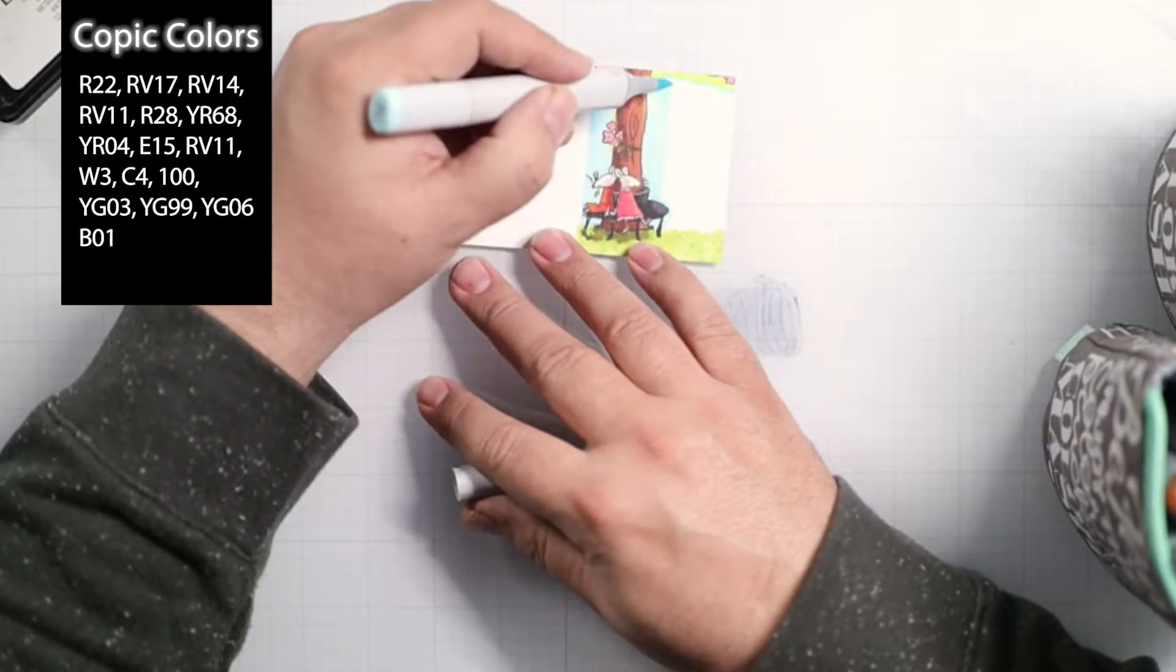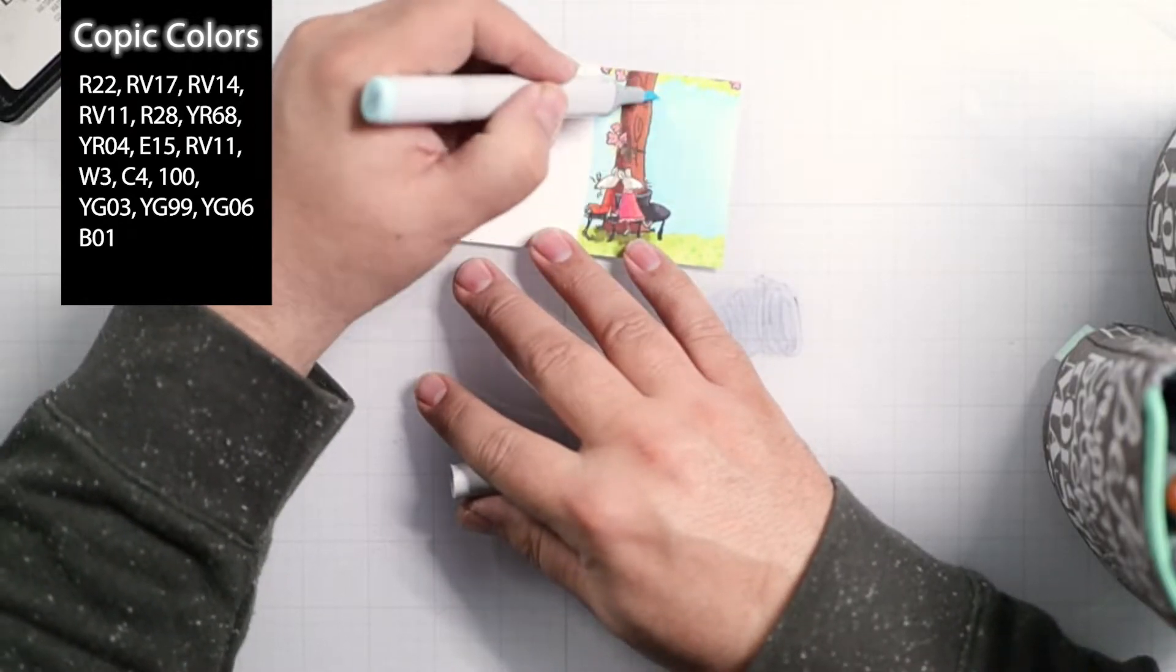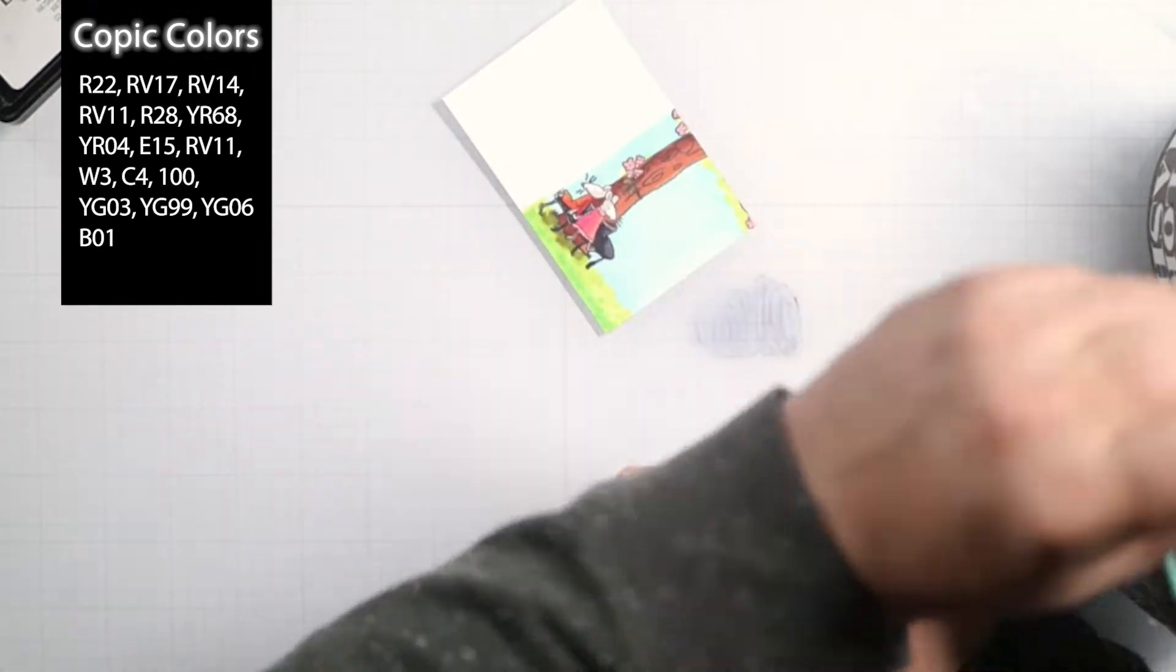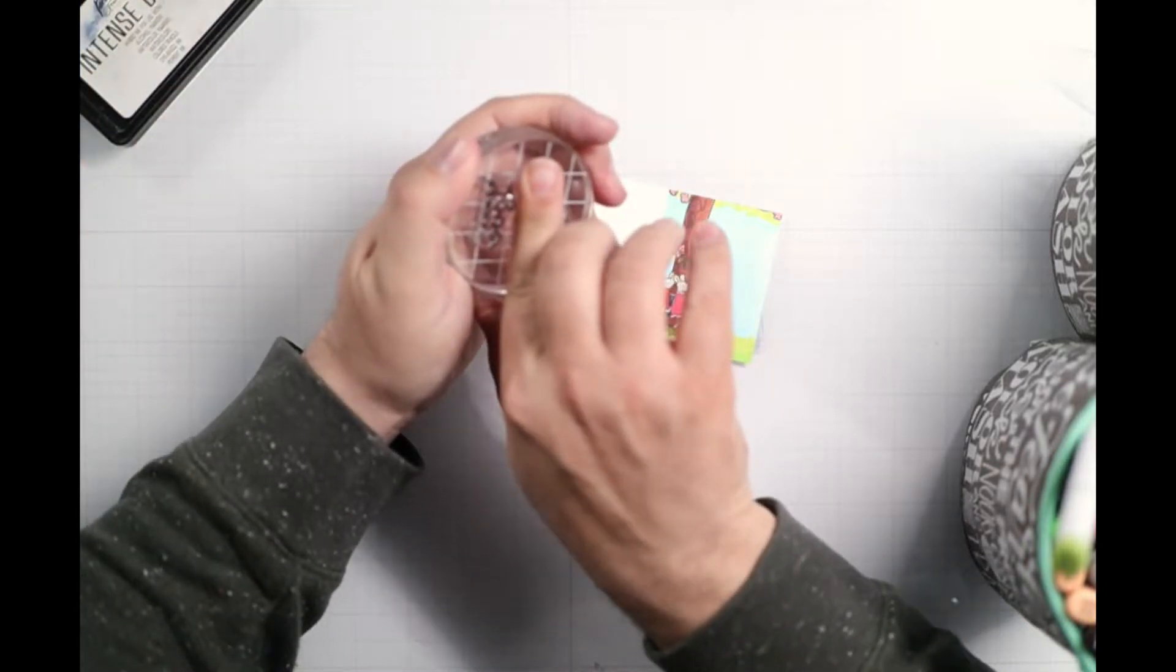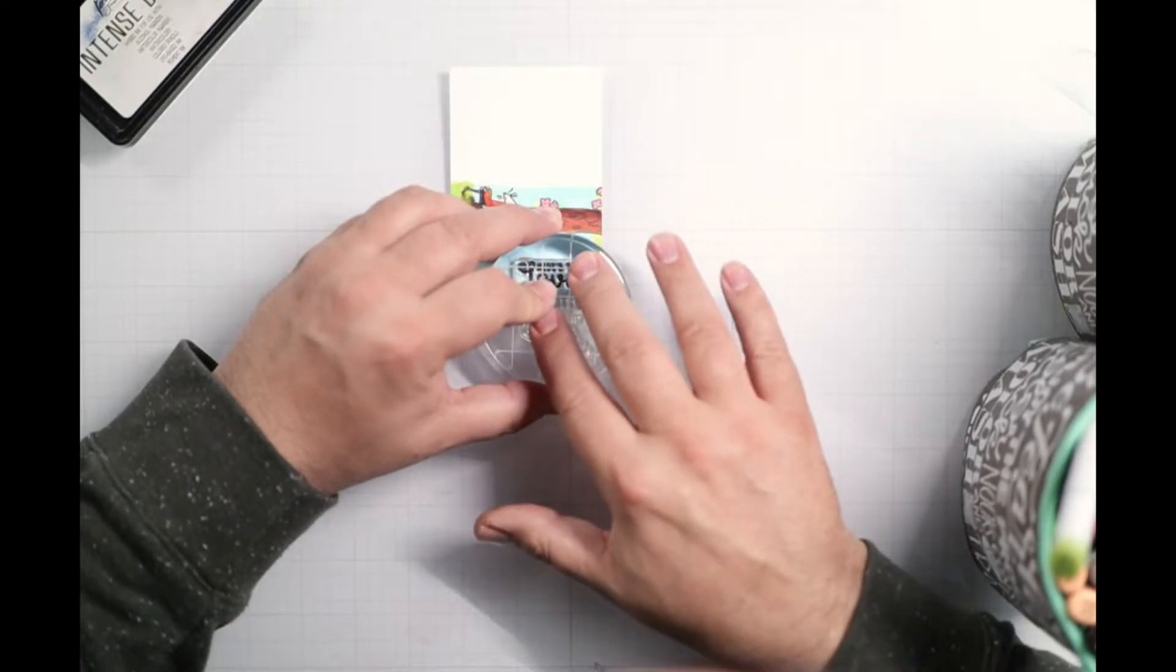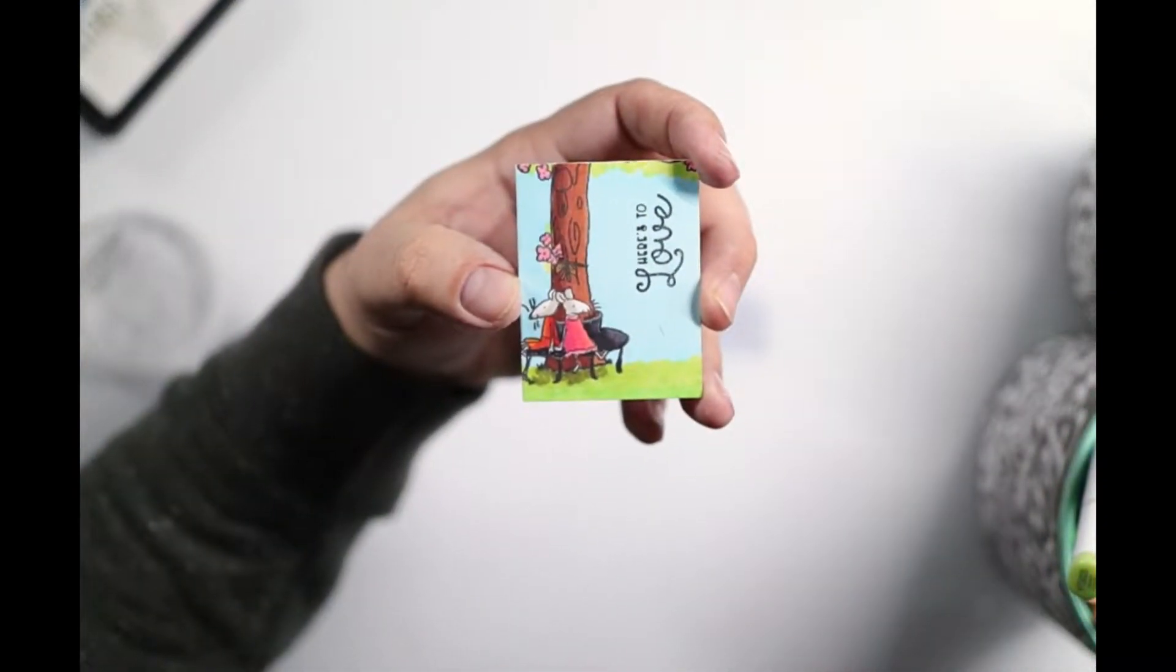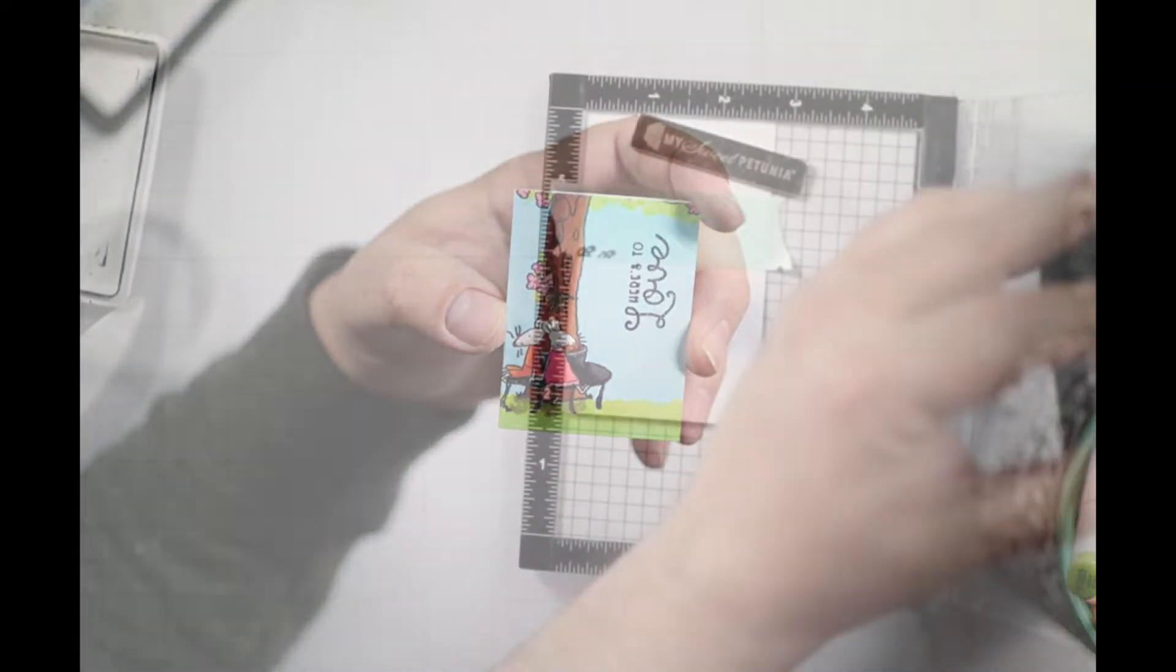Once I've got this image colored in, my little scene stamped out and colored, I'm going to take out one of the sentiments from the Happily Ever After stamp set and I'm just going to ink up part of this. Now this is one way you can get part of the larger stamp or sentiment stamps to kind of break up for you on these smaller cards. You can also do stamp surgery, which we will do in a minute.